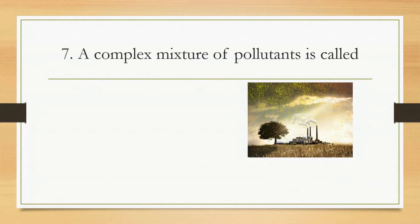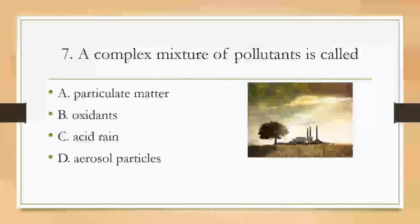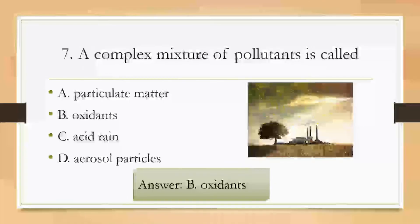Number 7. A complex mixture of pollutants is called: A, Particulate Matter. B, Oxidants. C, Acid Rain. Or D, Aerosol Particles. The answer is B, Oxidants.